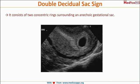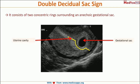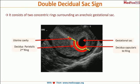Let me again show you through the diagram. Here this is our uterine cavity, this is our gestational sac. This is our first ring — decidua capsularis — and this is our second ring — decidua parietalis — and this is our arcuate vessel. This is the double decidual sac sign seen in early intrauterine pregnancy, in almost 50% of early intrauterine pregnancies.